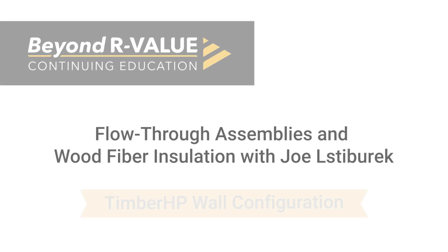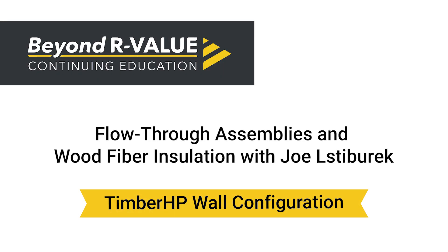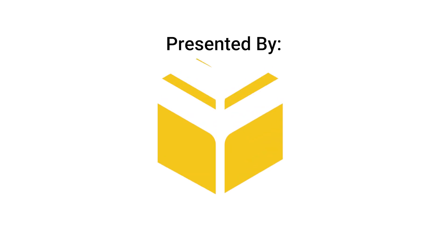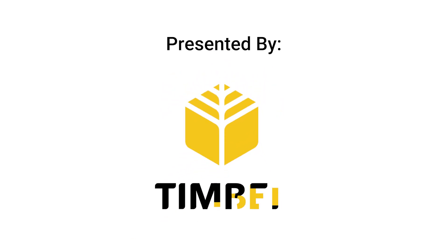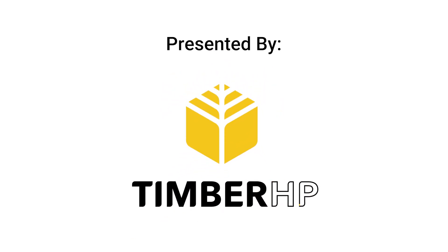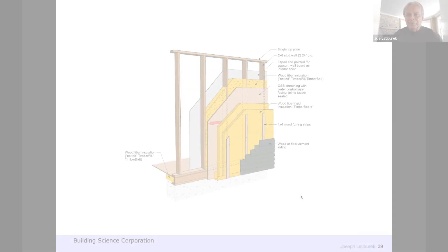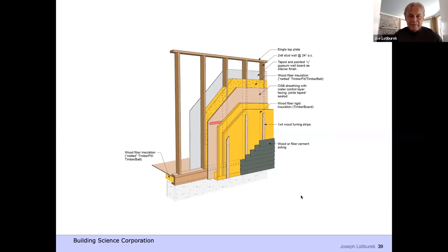For me, this is my go-to wall simply because I don't think R30 is enough anymore. Call me old-fashioned, call me whatever, call me names. But I'll take a 2x6 advanced frame wall, fill it with my wood fiber bat.